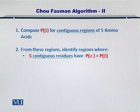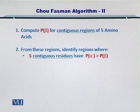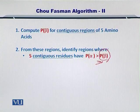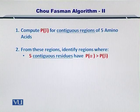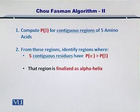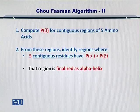From these regions, you need to identify where five contiguous residues have the propensity for alpha helices greater than the propensity for beta sheets. What you are clarifying here is that for those five amino acids, the propensity for alpha helix formation should be greater than for beta sheet formation. If such five amino acids are found, you label and finalize them as alpha helices. Otherwise, you evaluate those five contiguous amino acids for being part of a beta sheet.